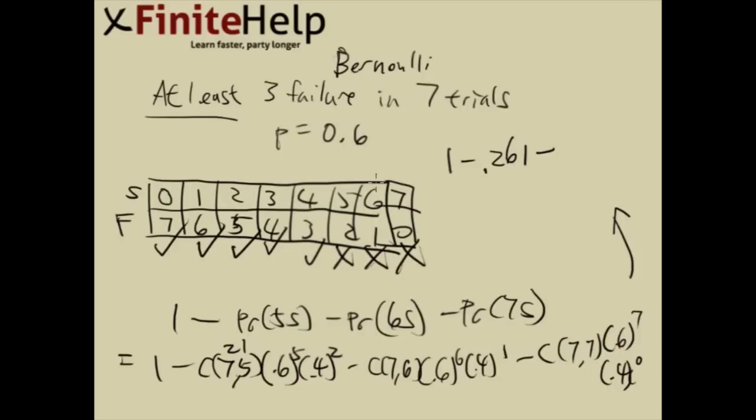Here 7 choose 6 is 7, so 7 times 0.6 to the sixth, times 0.4, that number is going to be 0.131.